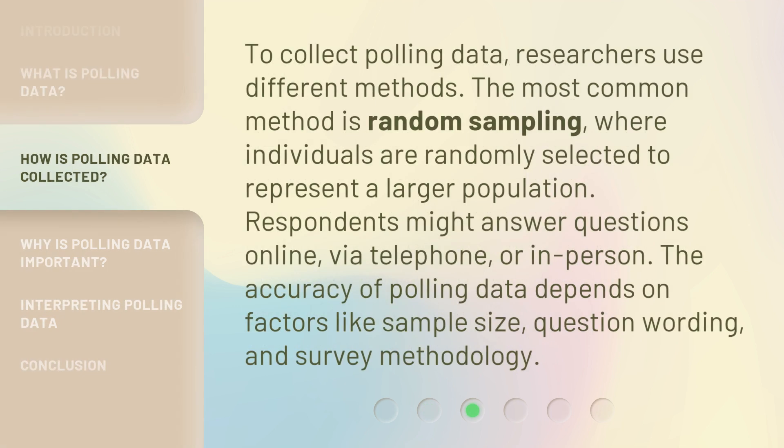To collect polling data, researchers use different methods. The most common method is random sampling, where individuals are randomly selected to represent a larger population. Respondents might answer questions online, via telephone, or in person. The accuracy of polling data depends on factors like sample size, question wording, and survey methodology.